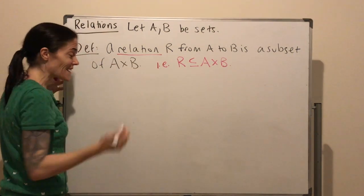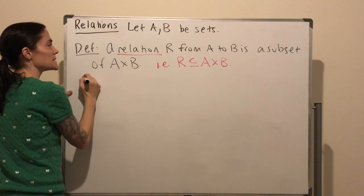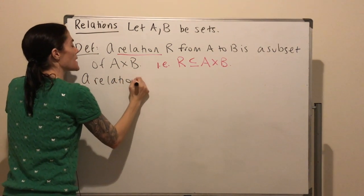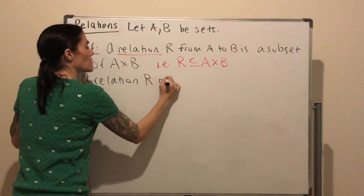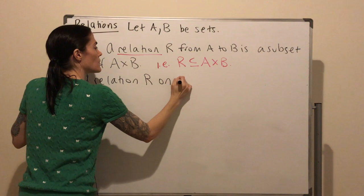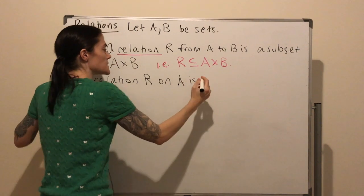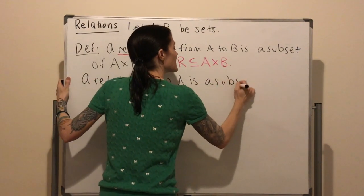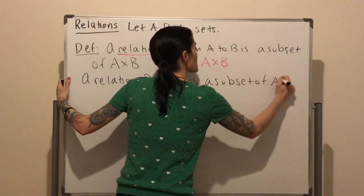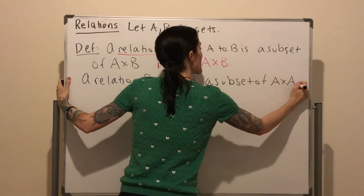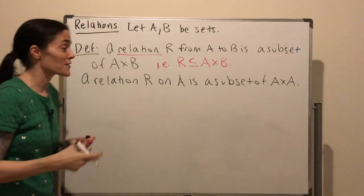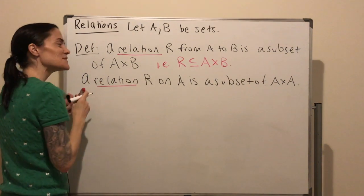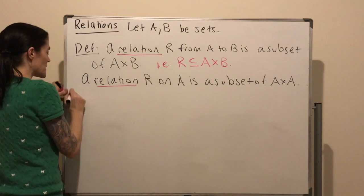Many times we will see the following: we will have a relation on A, and this is a subset of A cross A. This is when A and B are the very same set. So maybe let's do an example.